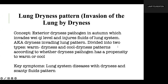This is due to an exterior dryness pathogen in autumn, which invades the Wei-Qi level and also injures fluids of the lung system. It is also called dryness invading the lung pattern. It is divided into two types, warm dryness and cool dryness patterns, according to whether the dryness pathogen has a propensity to warm or cool.